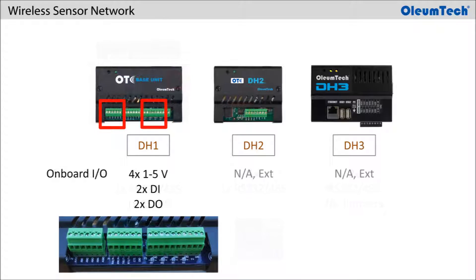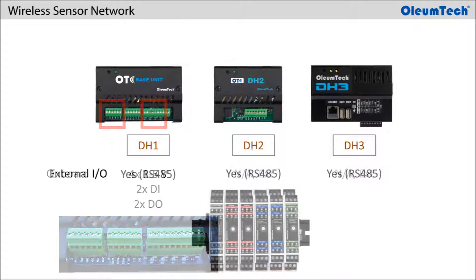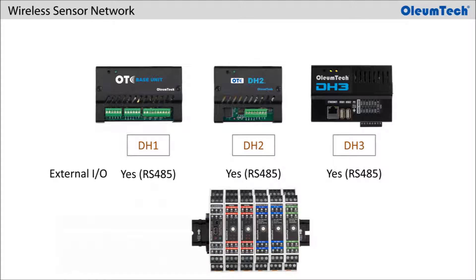Only the DH1 is equipped with onboard IOs, with four 1-5 volt analog inputs, two discrete inputs, and two discrete outputs. External IO expansion modules are available for use with all gateways.